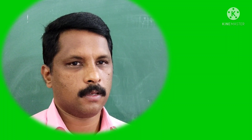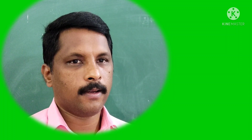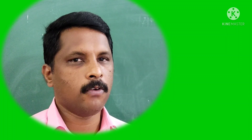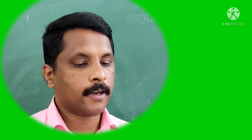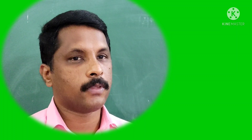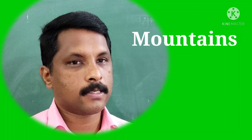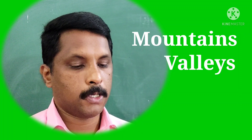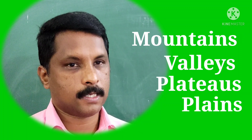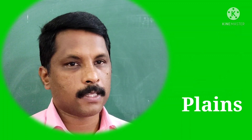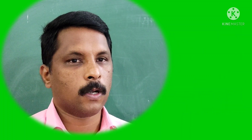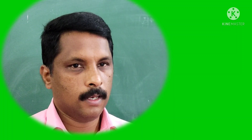What are landforms? Landforms are the different shapes which are found over the surface of the earth. The different shapes found over the surface of the earth are mountains, valleys, plateaus, plains, etc. These different shapes found over the surface of the earth are called landforms.